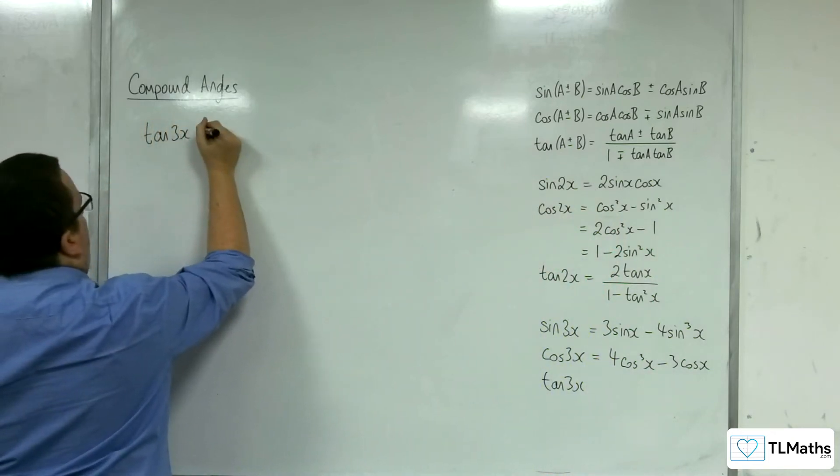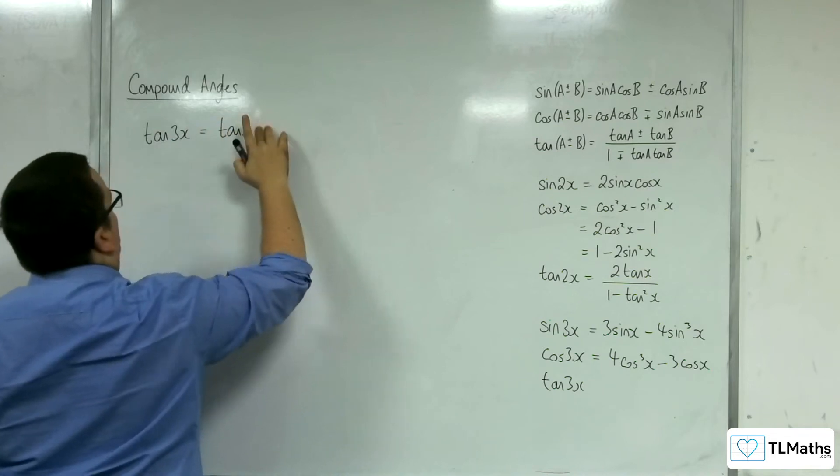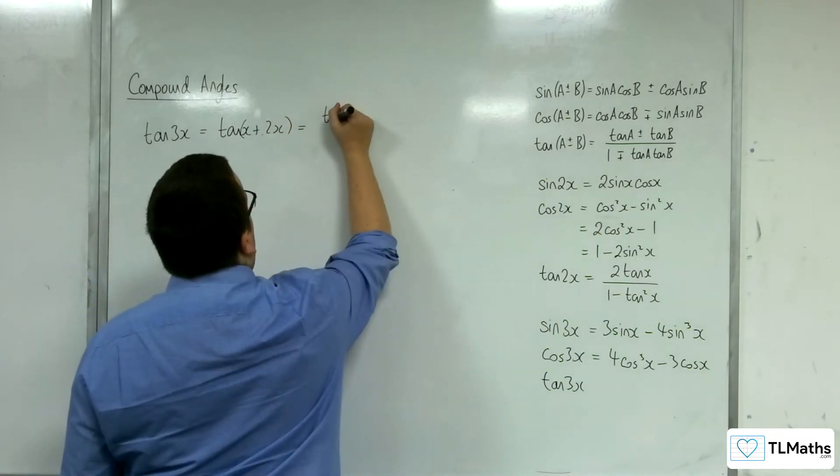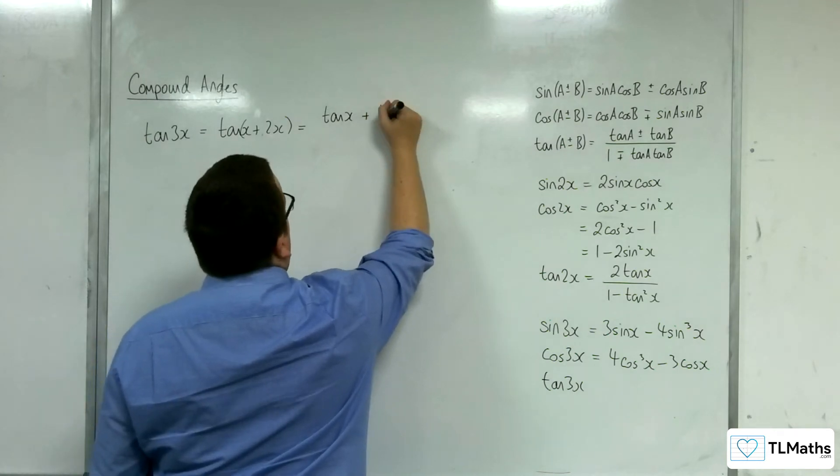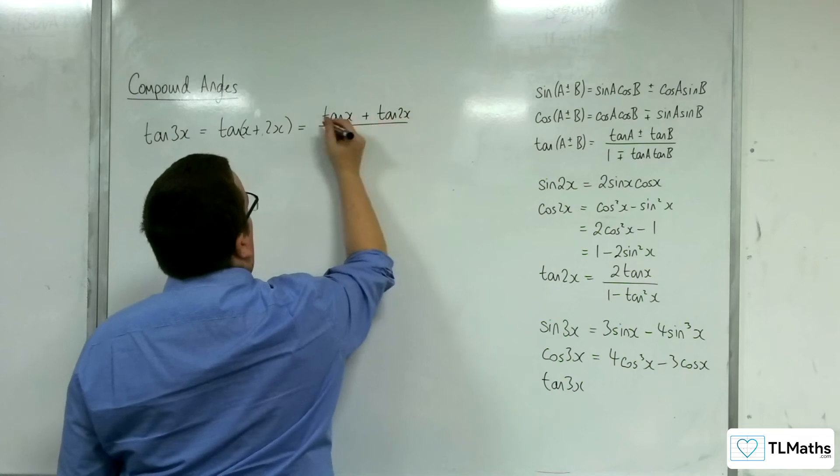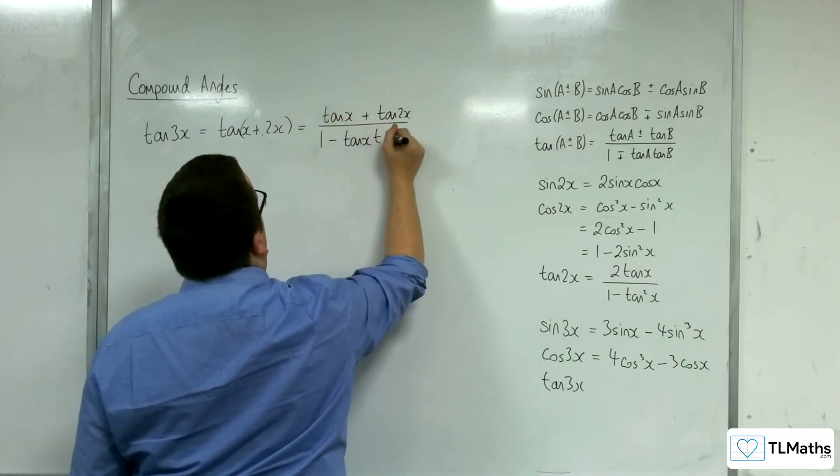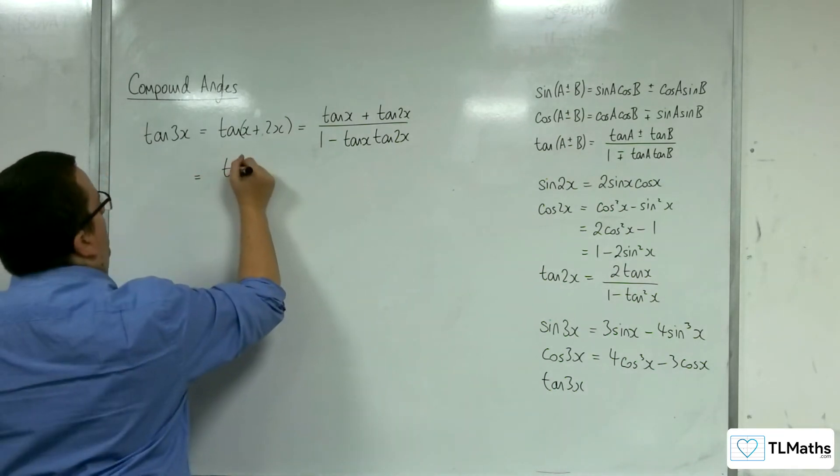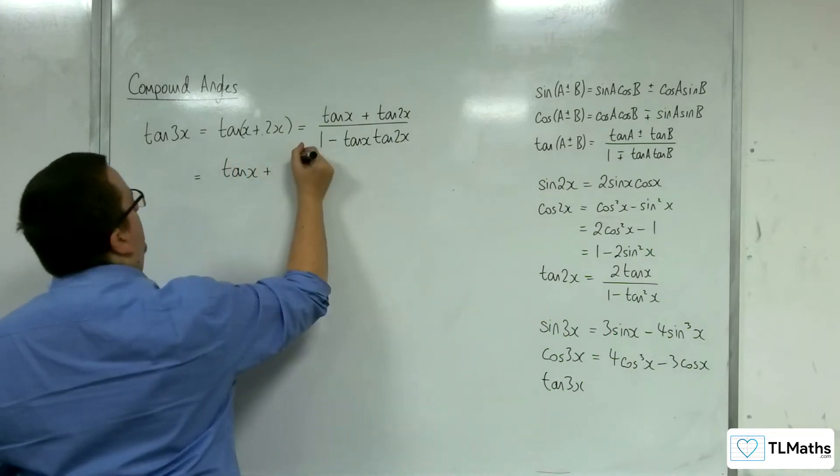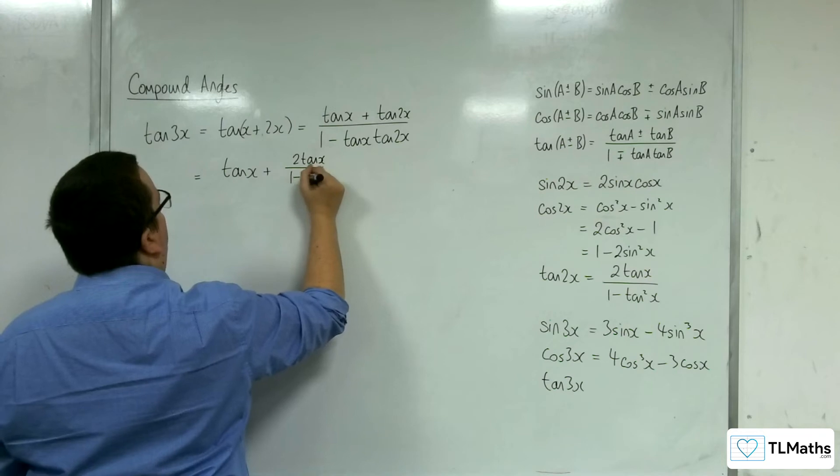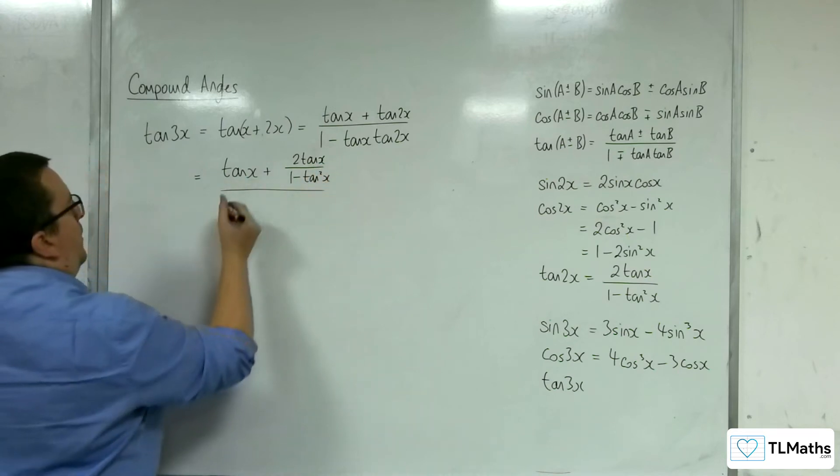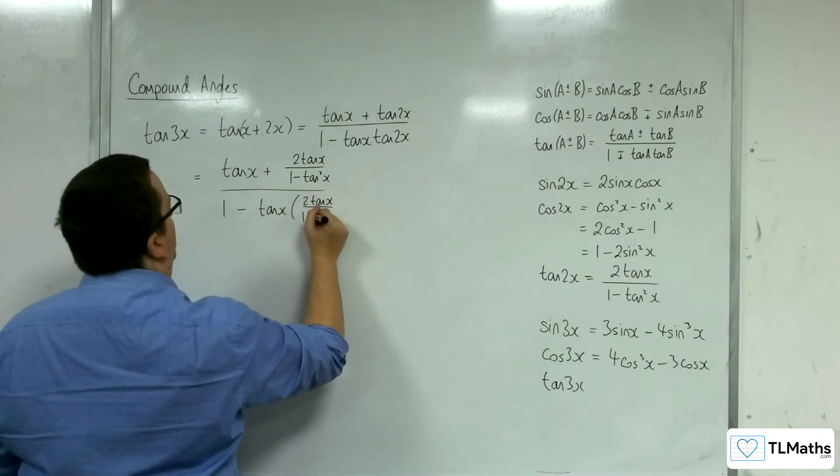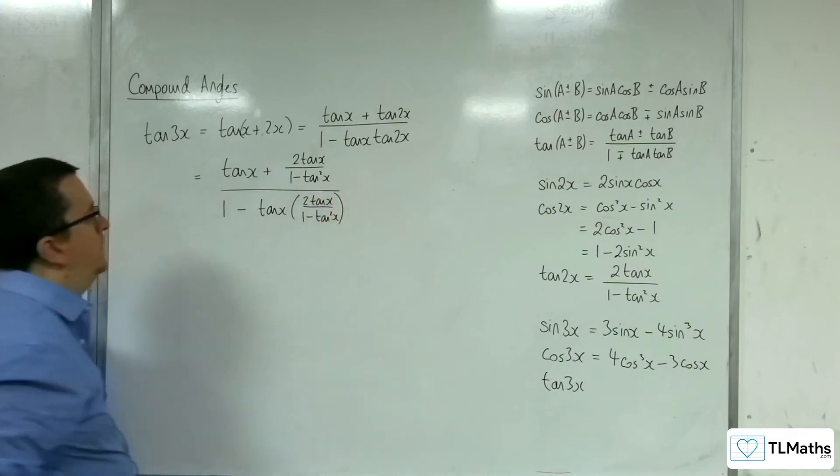So tan of 3x would be tan of x plus 2x. OK. So we will have tan of x plus tan of 2x over 1 minus tan x tan 2x. OK. So I'm going to have fractions within fractions here. So I'm going to have tan x plus tan 2x. 2 tan x over 1 minus tan squared. Divided by 1, take away, tan x times 2 tan x over 1 minus tan squared.